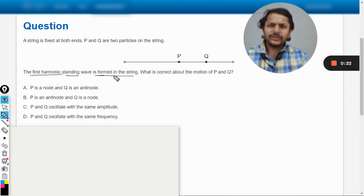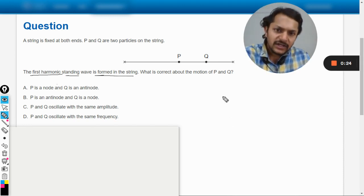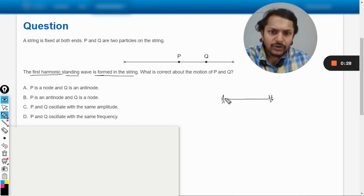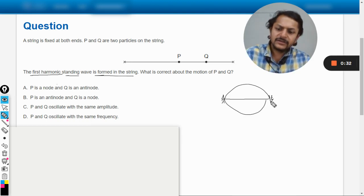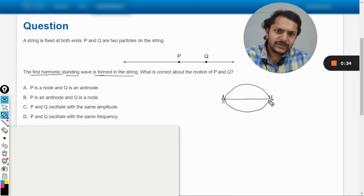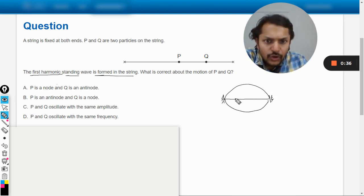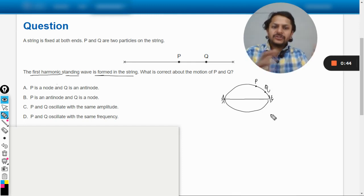How do you draw the first harmonic in that? Let me draw the string here. This is the string, so how do you draw the first harmonic? It is drawn like this. So this particle P somewhere here, this particle Q somewhere here, they would be shown like this.